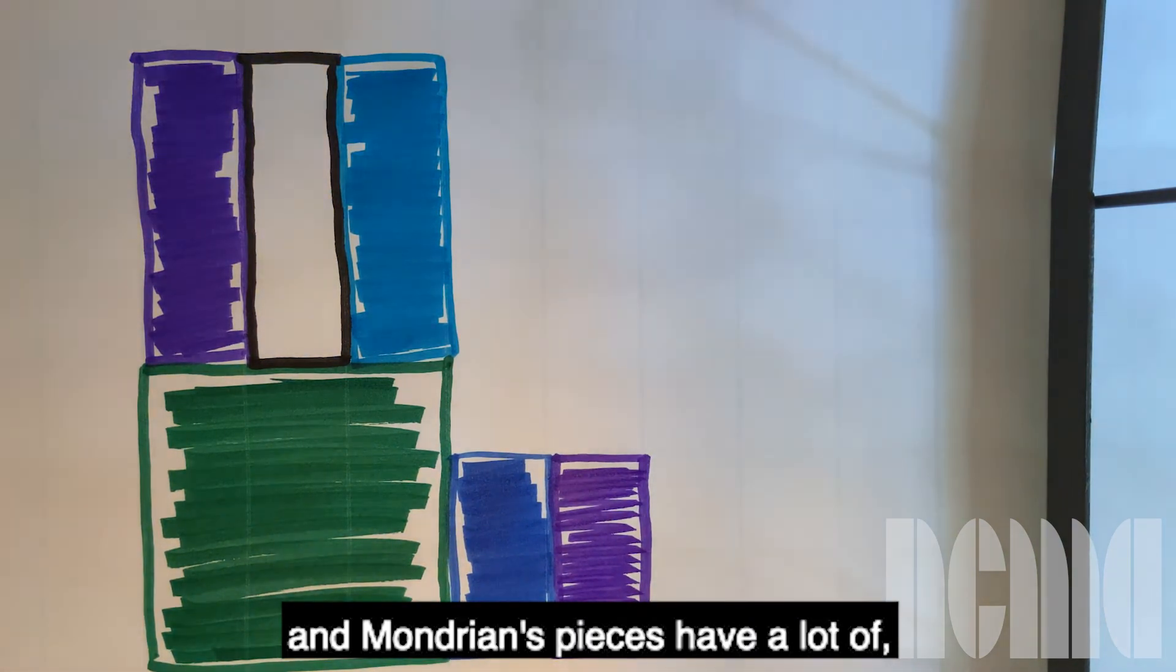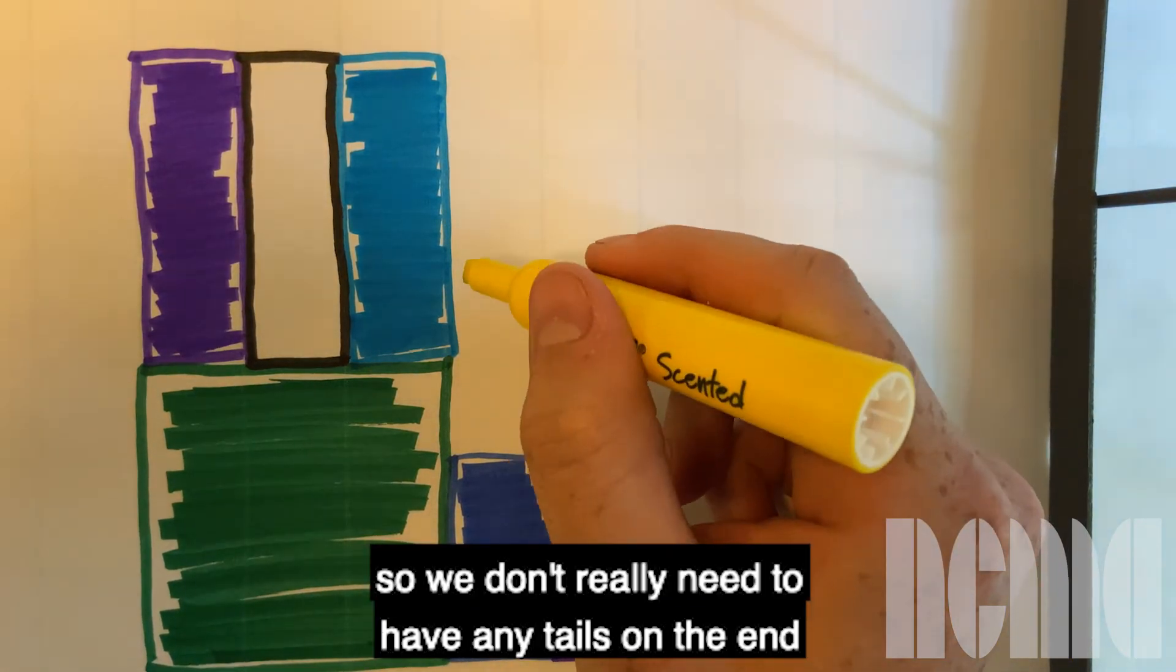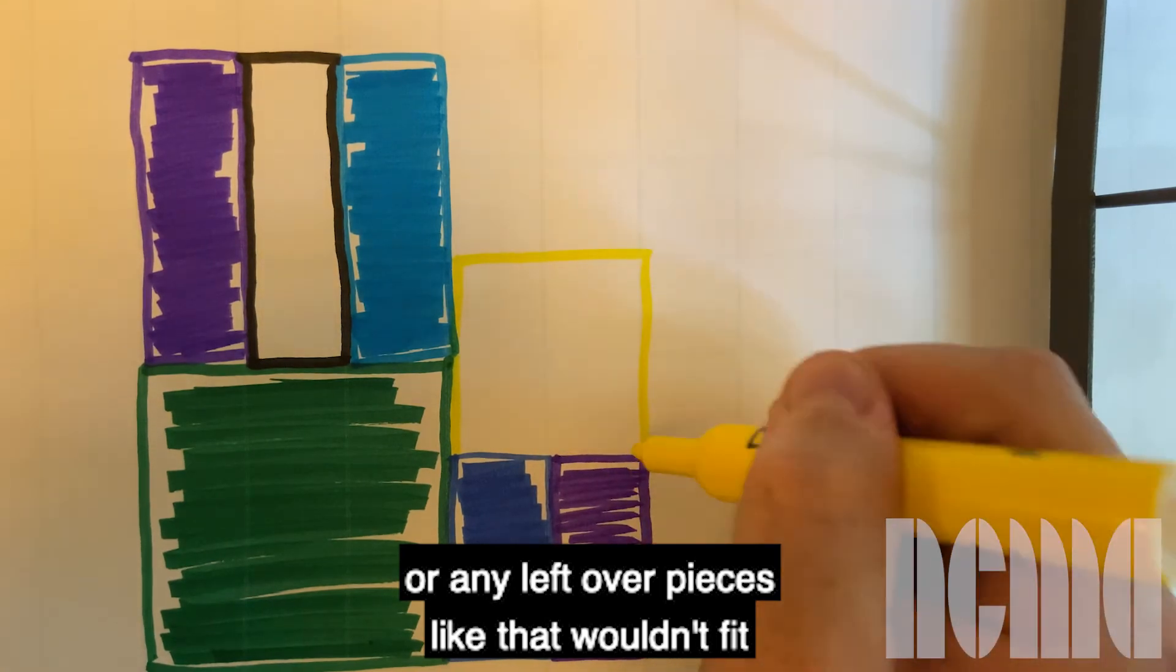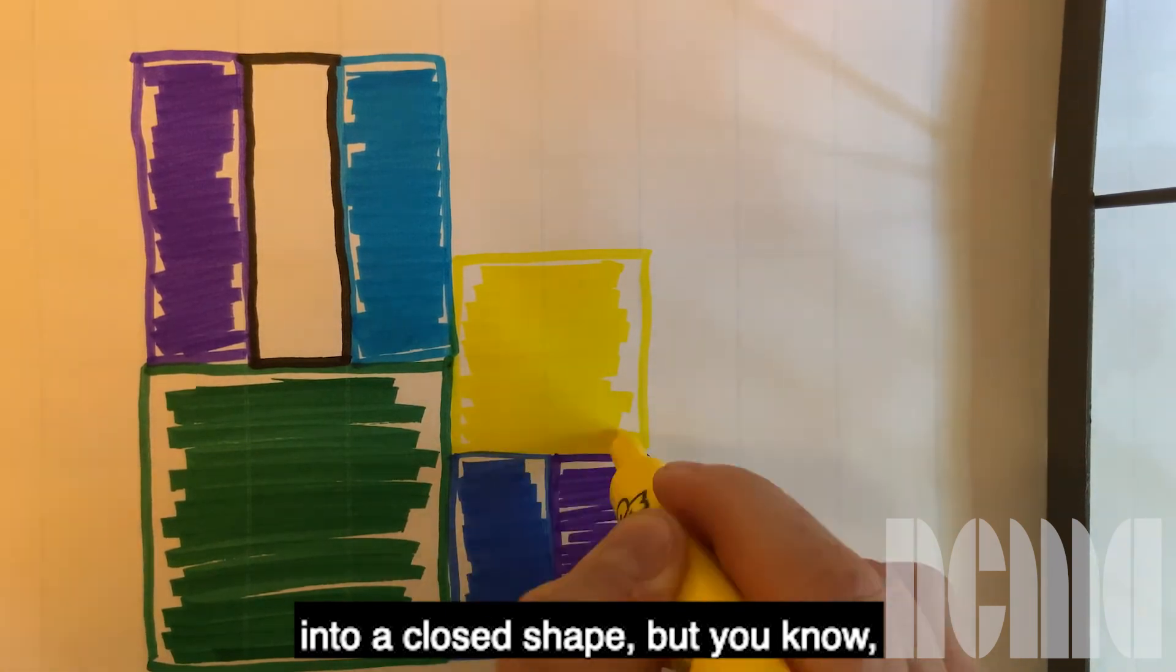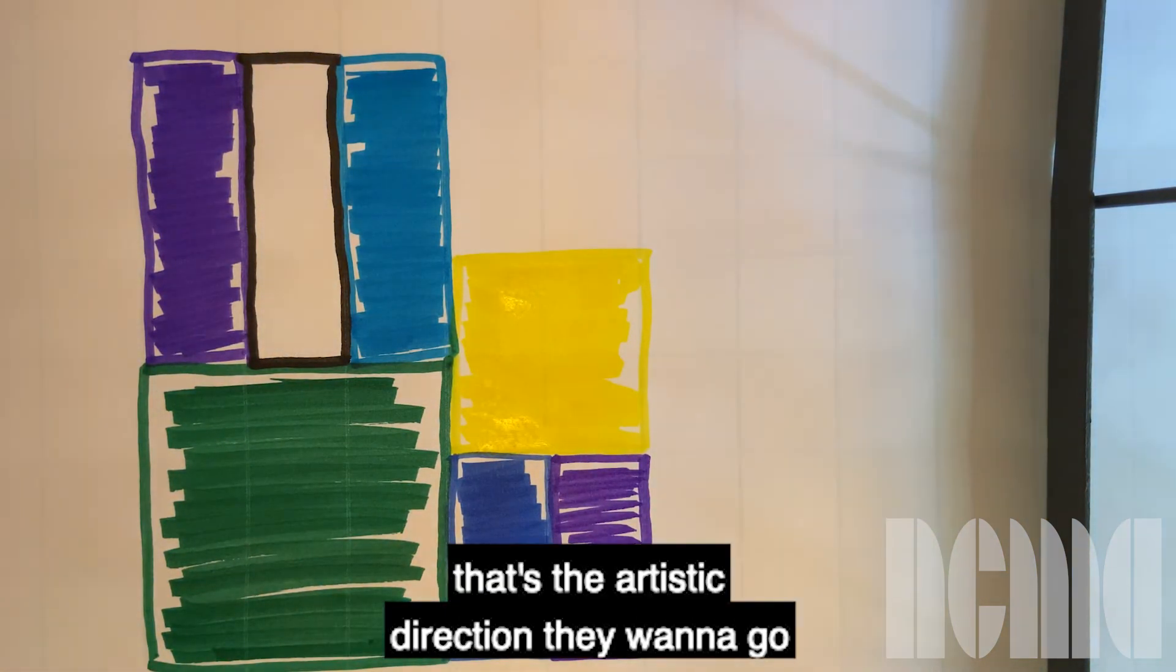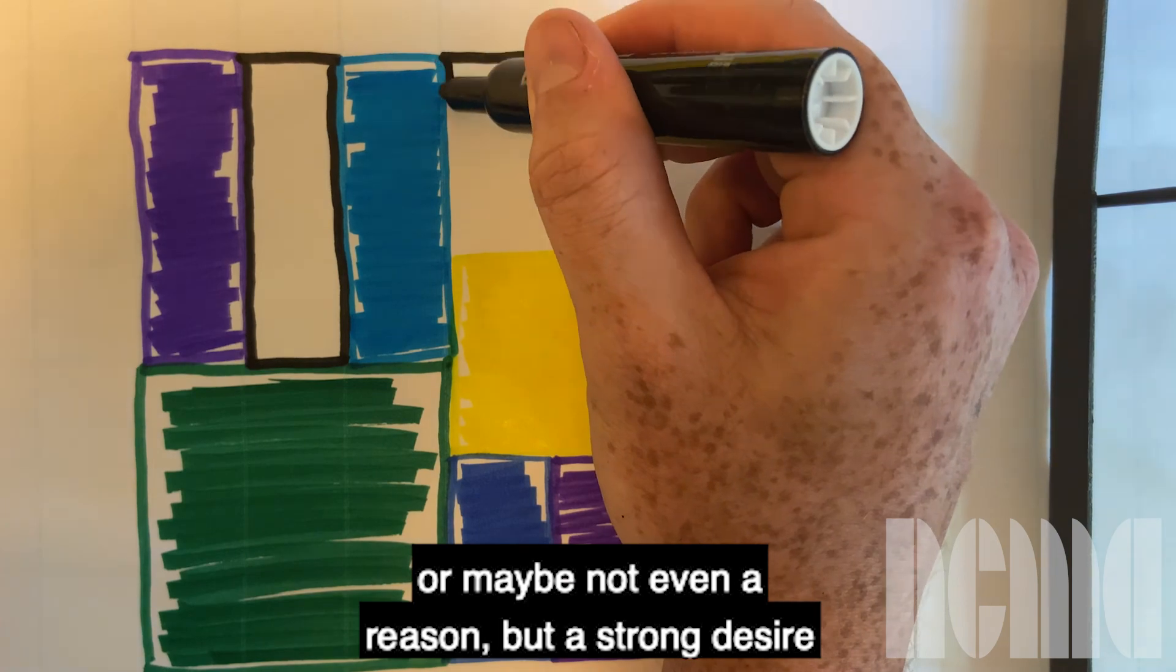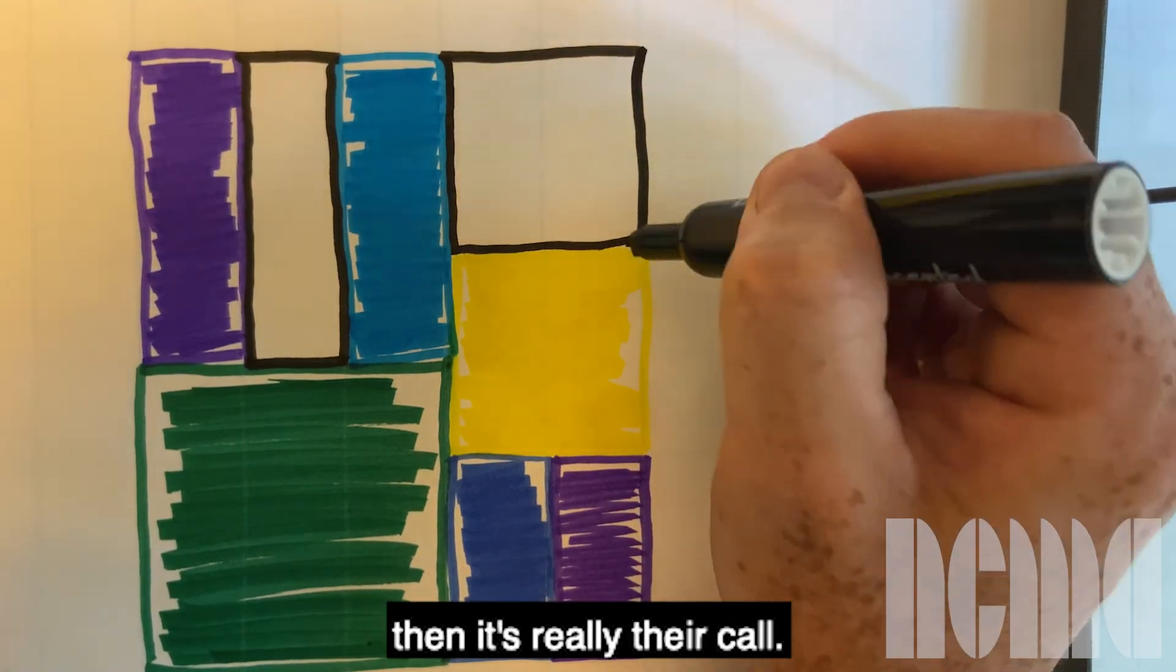And Mondrian's pieces usually were rectangles or squares so we don't really need to have any tails on the end or any leftover pieces like that that wouldn't fit into a closed shape. But you know, then again if the students decide that's the artistic direction they want to go and they have like a reason why or maybe not even a reason but a strong desire as to why they want to do it that way, then that's really their call.